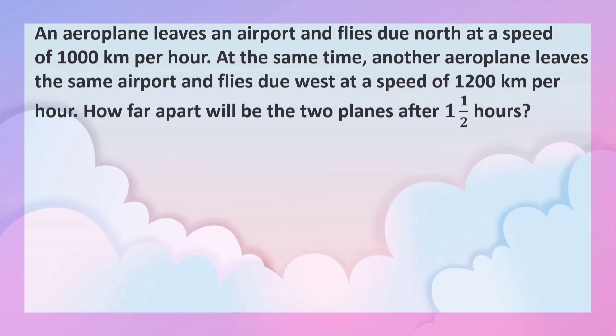An aeroplane leaves an airport and flies due north at a speed of 1000 km per hour. At the same time, another aeroplane leaves the same airport and flies due west at a speed of 1200 km per hour. How far apart will the two planes be after one and a half hours?